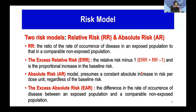There are two risk models. The first is relative risk (RR) and the second is absolute risk (AR). The relative risk is the ratio of the rate of occurrence of disease in an exposed population to the non-exposed population. The excess relative risk (ERR) equals RR minus one — it is the proportional increase in the baseline risk. The absolute risk model presumes a constant absolute increase of risk per dose unit, regardless of baseline risk. The excess absolute risk (EAR) is the difference in the rate of occurrence of a disease between the exposed and a comparable non-exposed population.